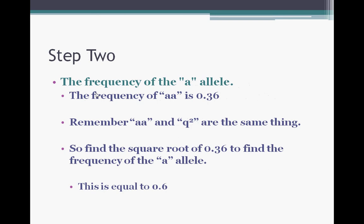Step two, we want to figure out the little a allele. The frequency of little a, little a is 0.36. So we just need to figure out what one, the frequency of one of those is. Remember, little a, little a, and q² are the same thing. So you know q², and you want to find q, because if q² is little a, little a, then one a is just q. So take the square root of 0.36. Use your calculator. It is, and you get that it's 0.6.